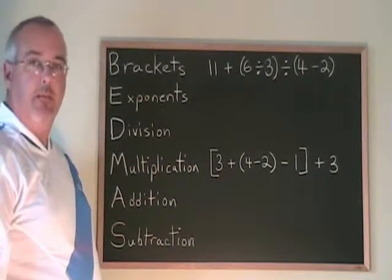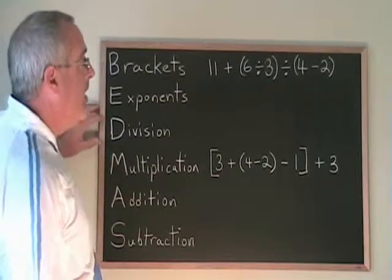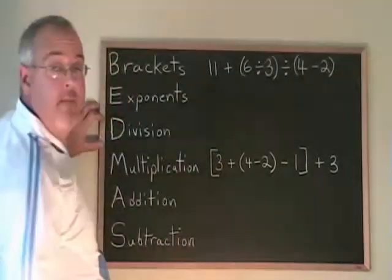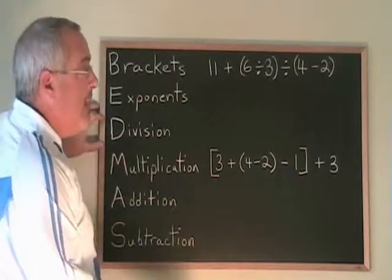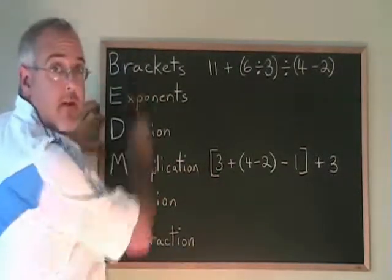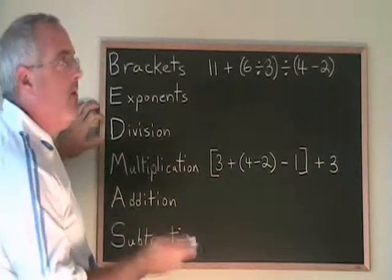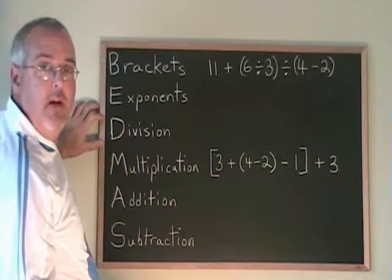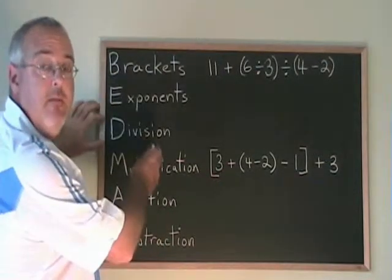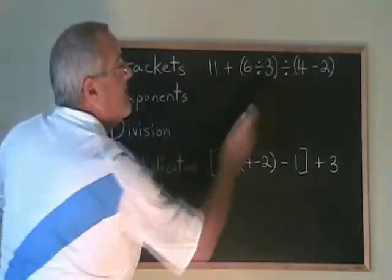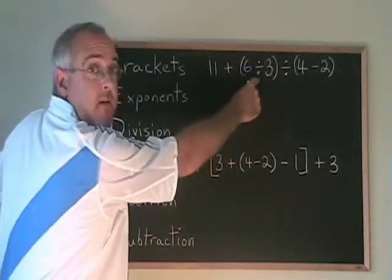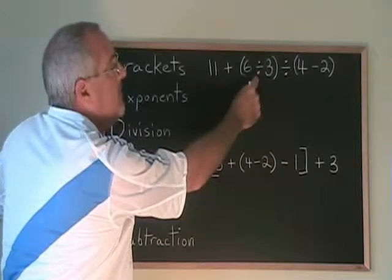Let's look at a couple more examples using brackets. Here we have an example that has two brackets. When we have two brackets, we know we have to do them first because brackets comes first in BEDMAS. But which of the two brackets do we do first? It's the same rule that we had with addition subtraction and multiplication division. Since there are two brackets, we do the one that we get to reading left to right first.